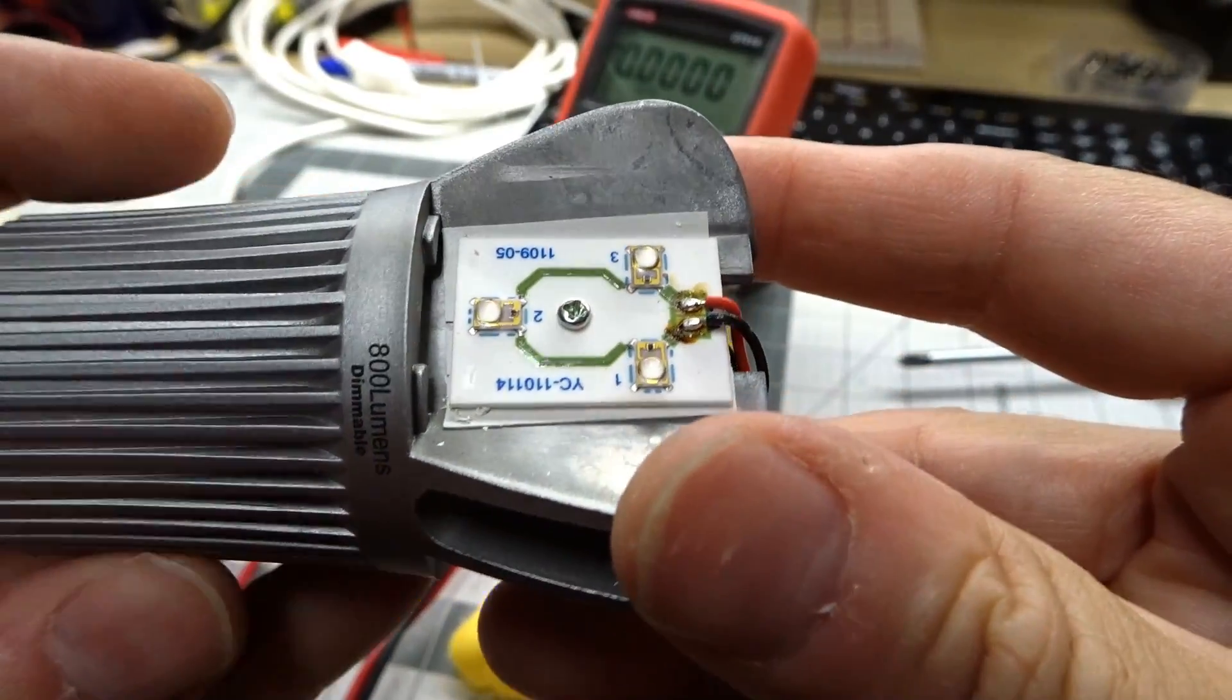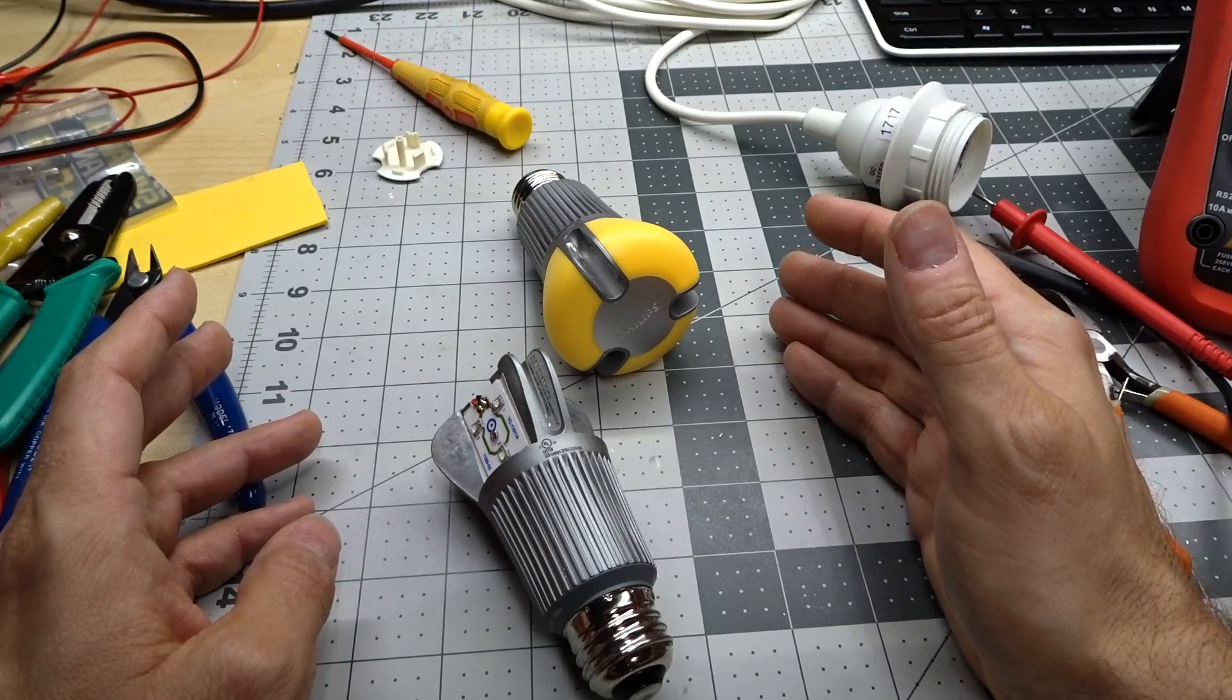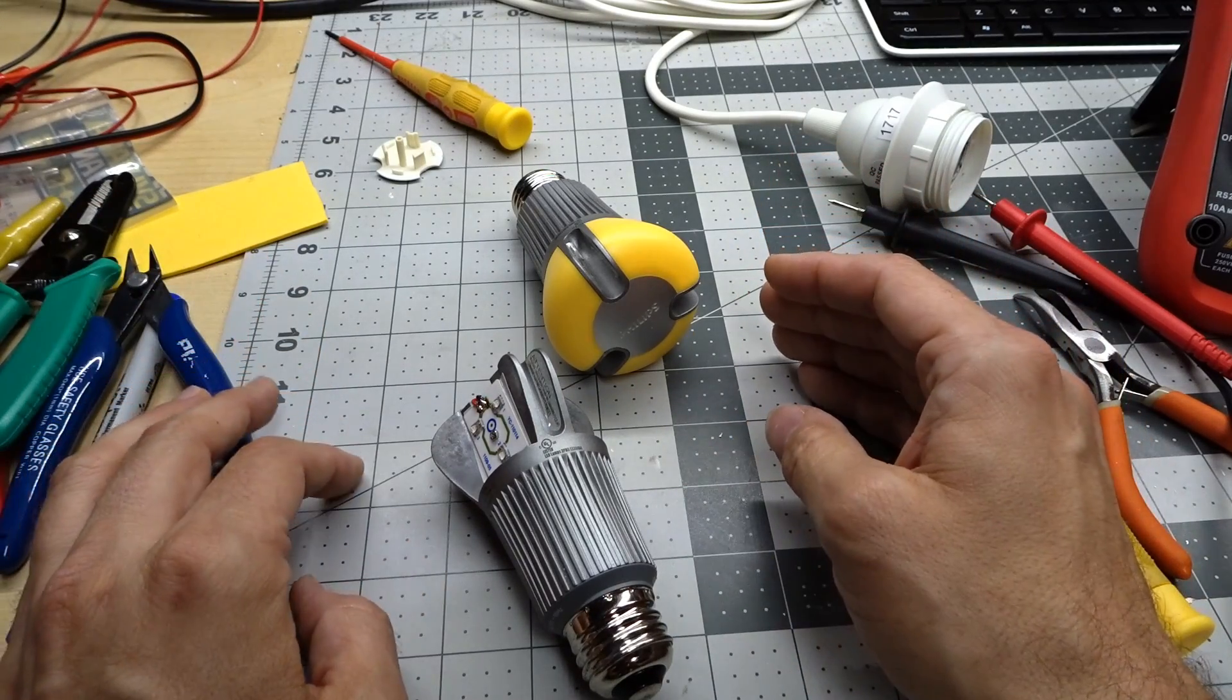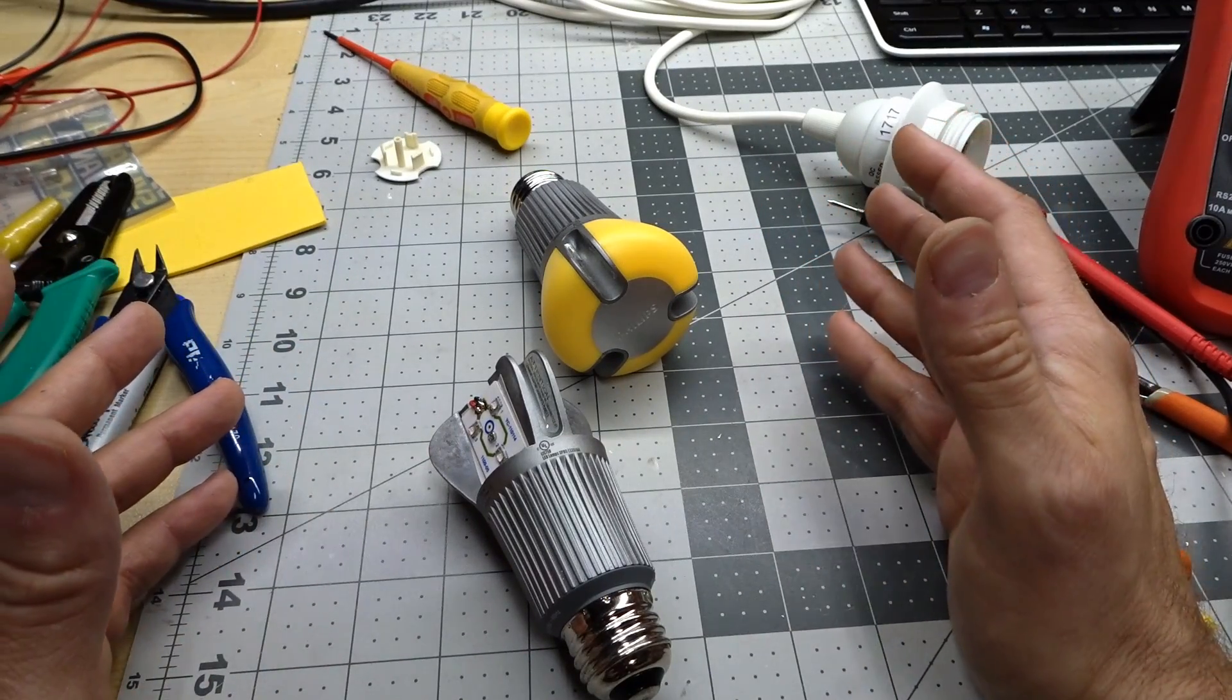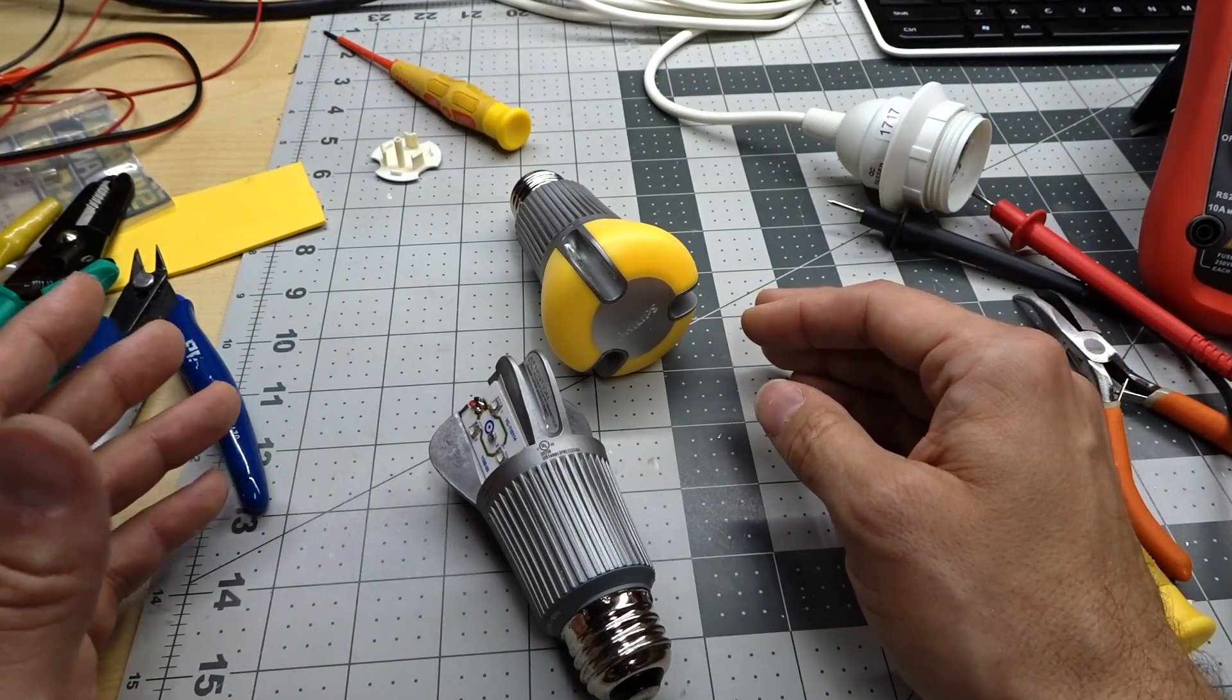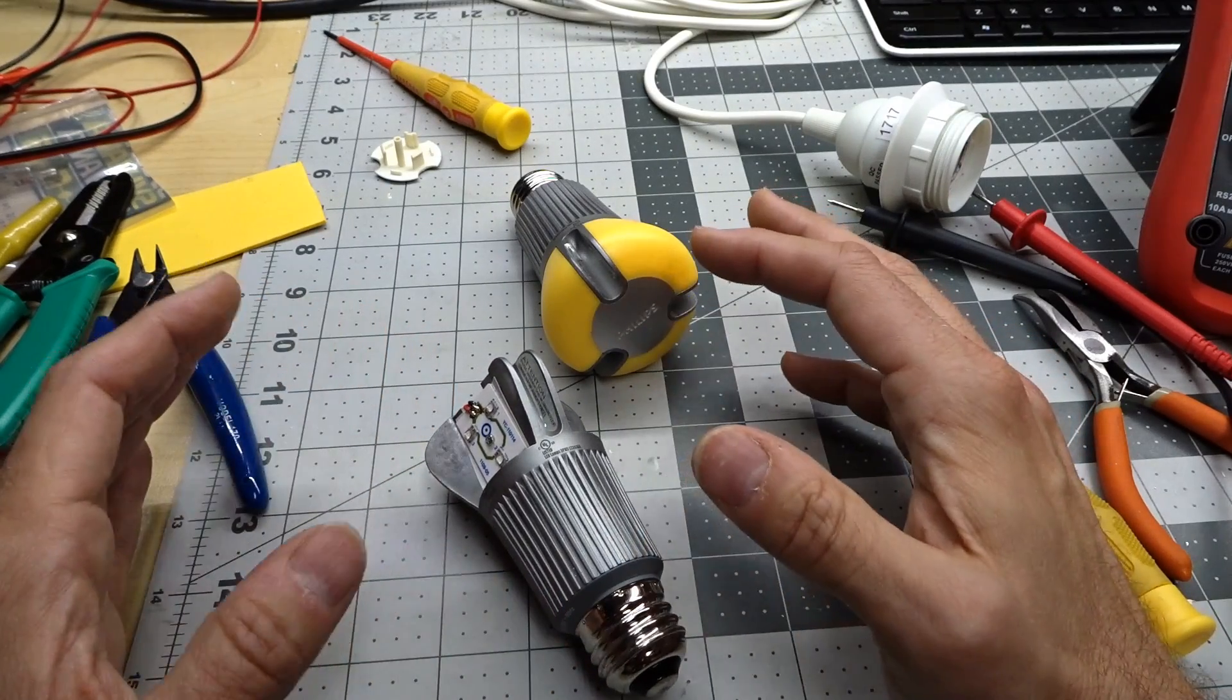So that got me thinking, could I use these for retrobrite? Now I've talked before about the fact that where I live in Portland, Oregon there's just not a lot of sunlight in the winter. But we're nearly in autumn right now and essentially the sun's gonna be gone for the next several months, so any kind of retrobriting will have to be done indoors.